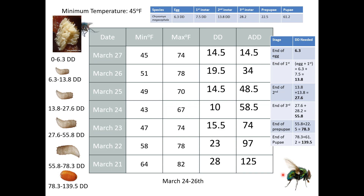What if I find pre-pupae maggots on March 27th? That range goes from 55.8 to 78.3 degree days. We reach 55.8 on March 24th, and we reach 78.3 on March 22nd. So our time of colonization estimation is March 22nd through March 24th.